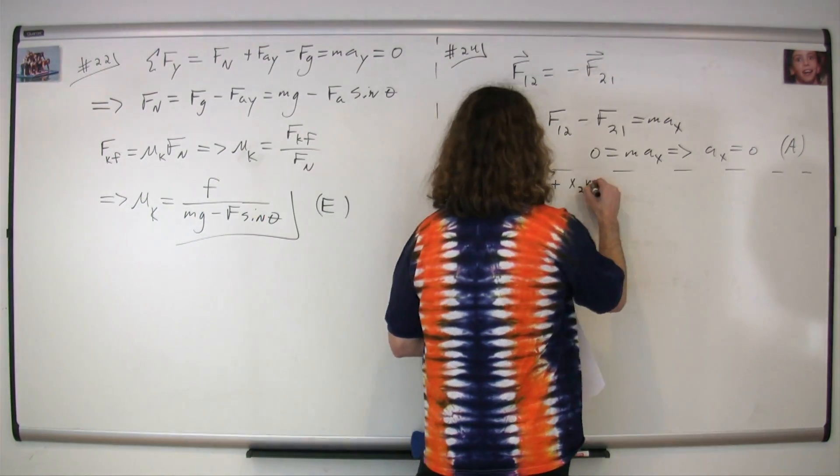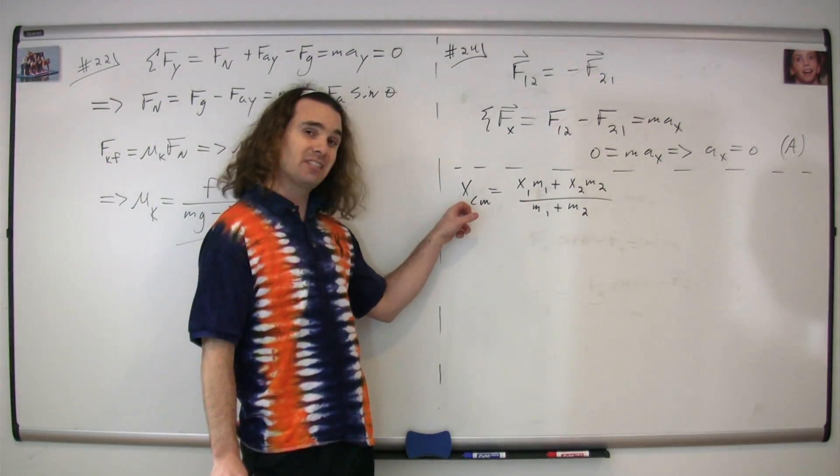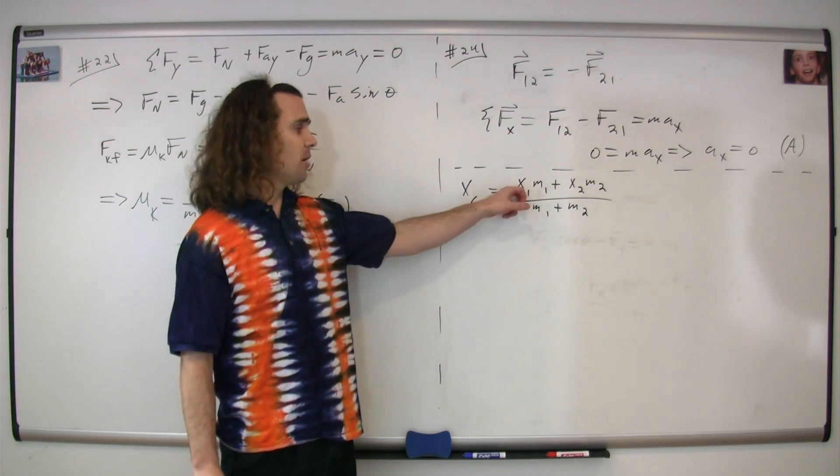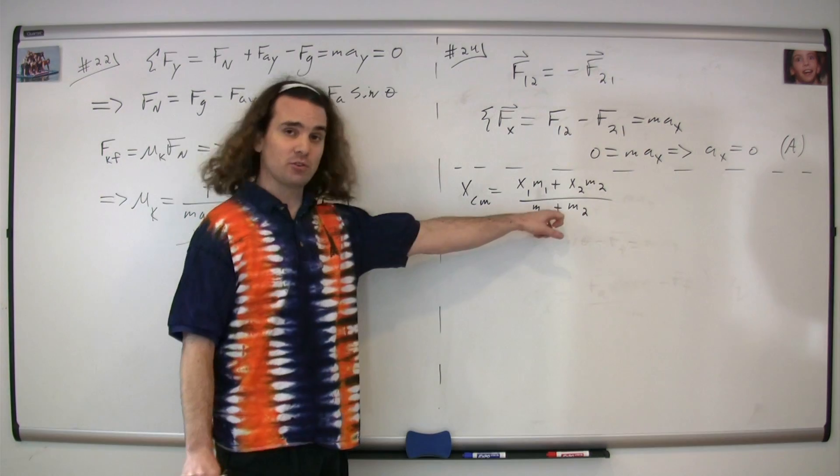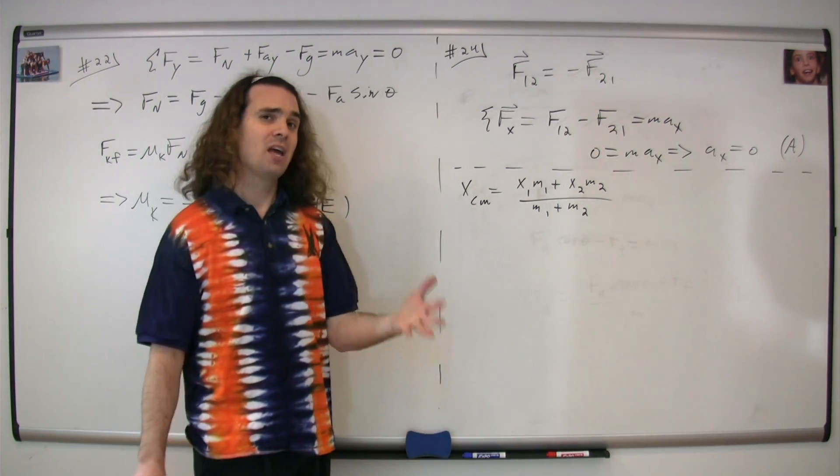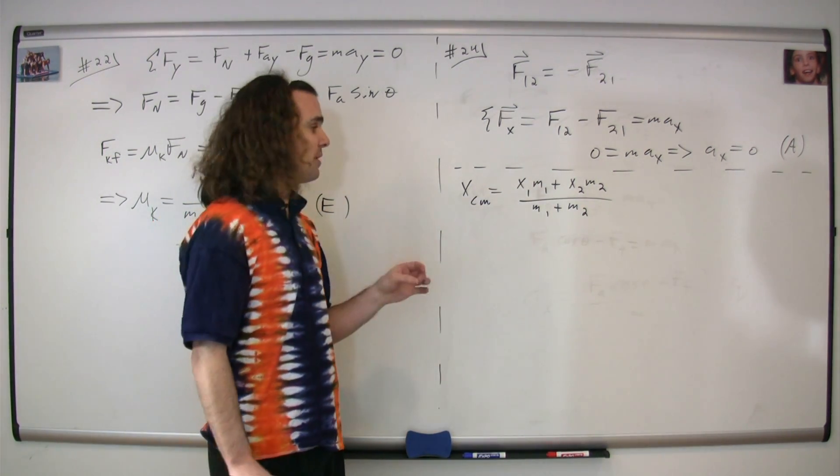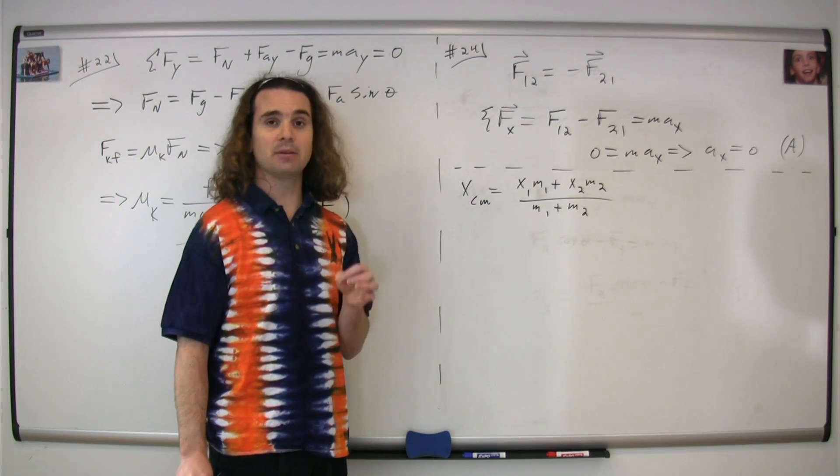You should start with the equation for the position of the center of mass of a system of particles. Position one times mass one plus position two times mass two, divided by the total mass, or mass one plus mass two. And we know that the derivative of position as a function of time is equal to velocity.